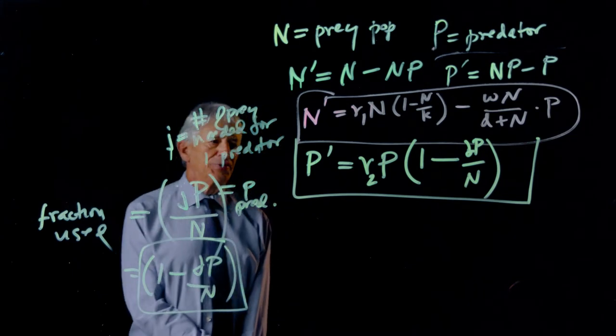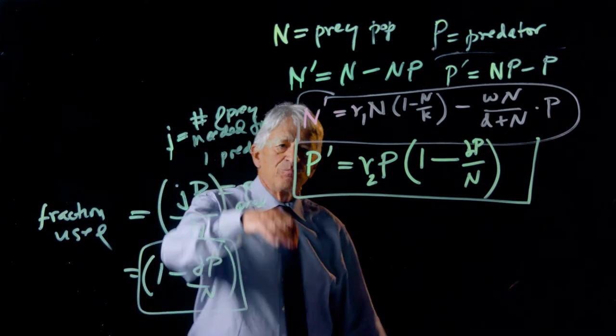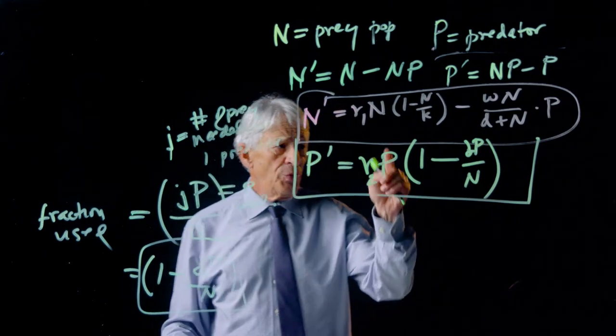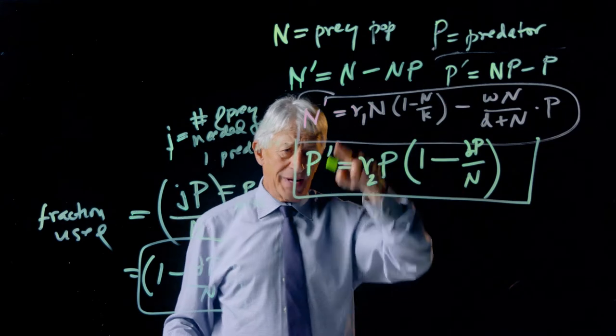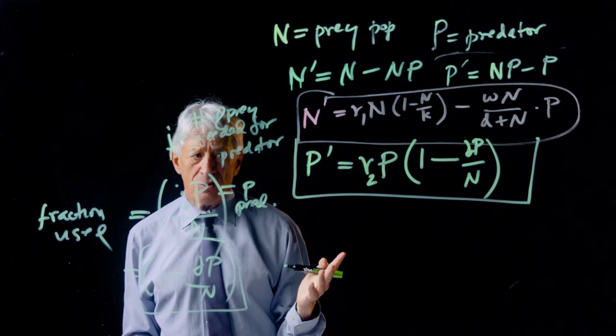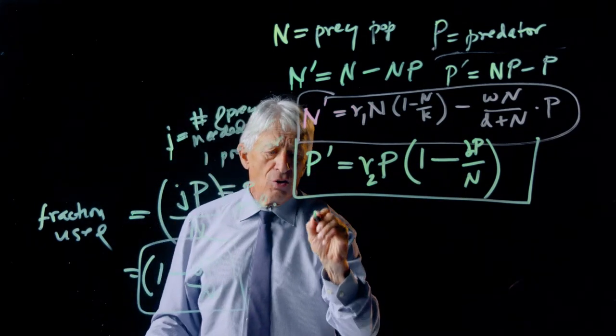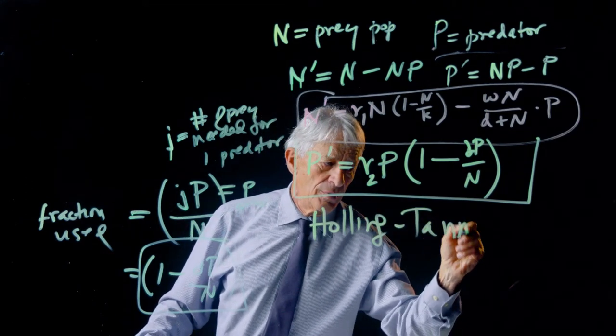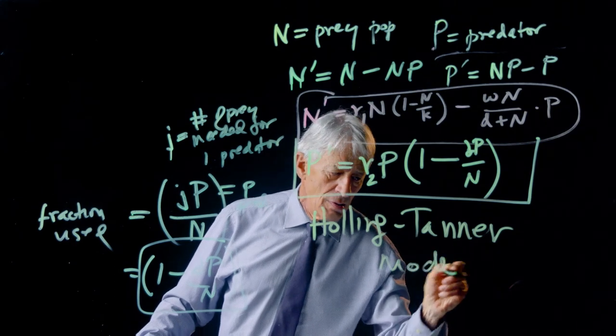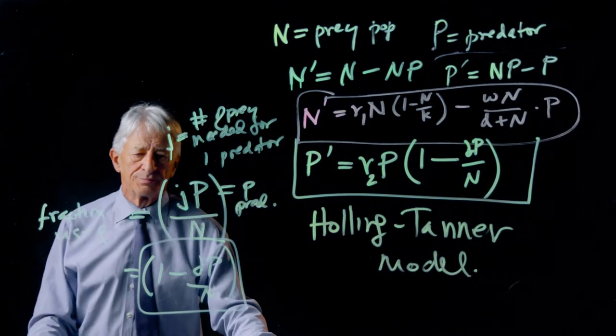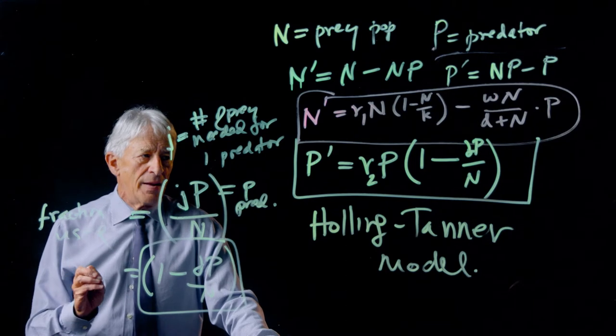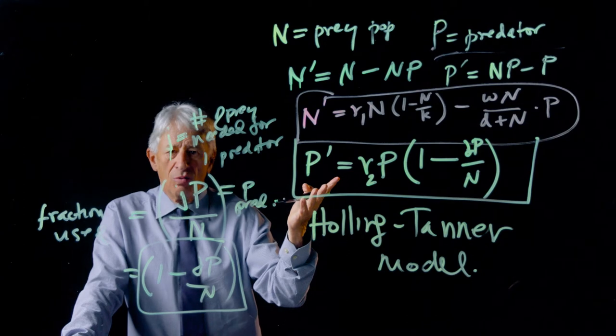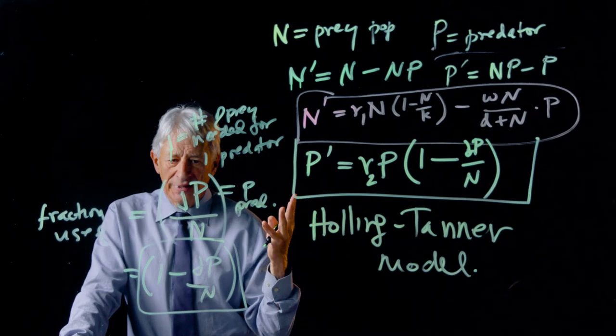And this is our new predator differential equation. So these two equations with these three realistic, more biologically realistic terms are called the Holling-Tanner model. And now let's ask what dynamics follow from the Holling-Tanner model.